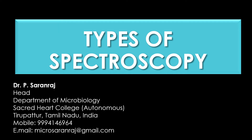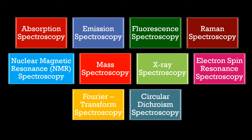Dear viewers, greetings. In this video we are going to discuss about the various types of spectroscopy. Spectroscopy is the study of interaction between matter and electromagnetic radiation. There are various types of spectroscopy and the classification is completely based on the nature of the interaction and the wavelength of the radiation used.